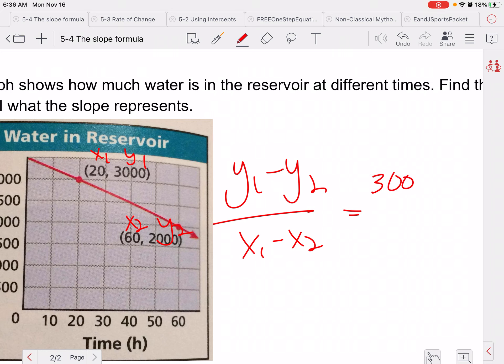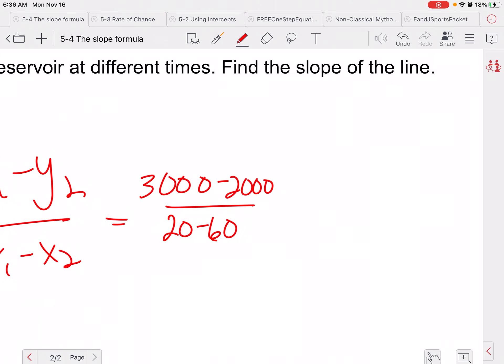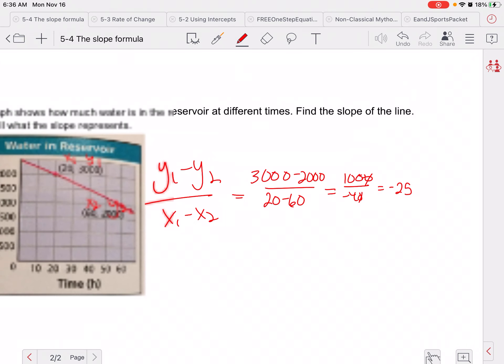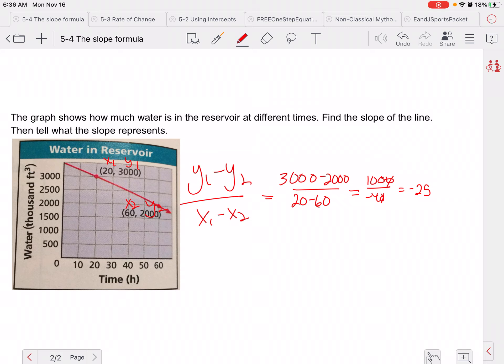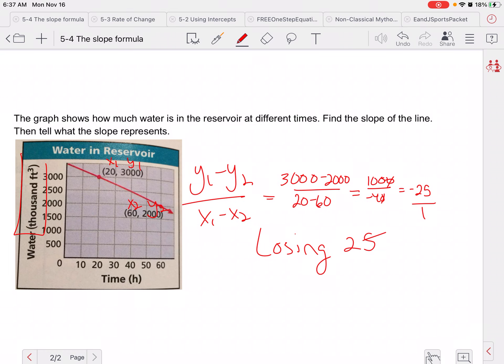So we're going to have 3,000 minus 2,000 over 20 minus 60. 3,000 minus 2,000 is 1,000 over negative 40. So we're going to have negative, and 4 goes into 1,000 125 times. So it's going to be negative 25 is our slope. Now what that slope means is we are losing 25,000 feet cubed per hour, because there'd be a 1 over here per hour.